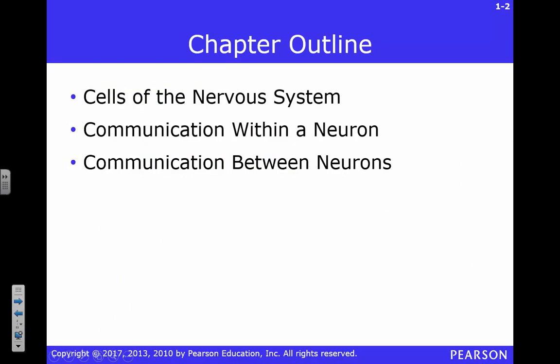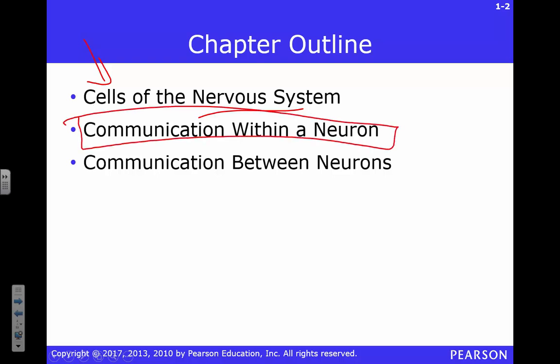There are all kinds of different cells in the nervous system — we'll talk about those and you'll know a little something about them when we're finished. We're going to talk about how the neuron communicates within itself and how it communicates between neurons.